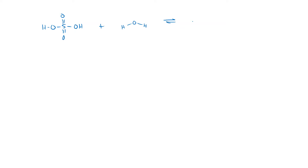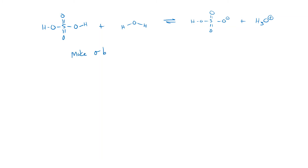We already drew out those products. What's happening here is that the hydrogen on H2SO4 is the one that gets transferred to H3O+. So we need to make a sigma bond between the oxygen of water and the hydrogen on sulfuric acid, and we need to break a sigma bond between that hydrogen and the oxygen on sulfuric acid.